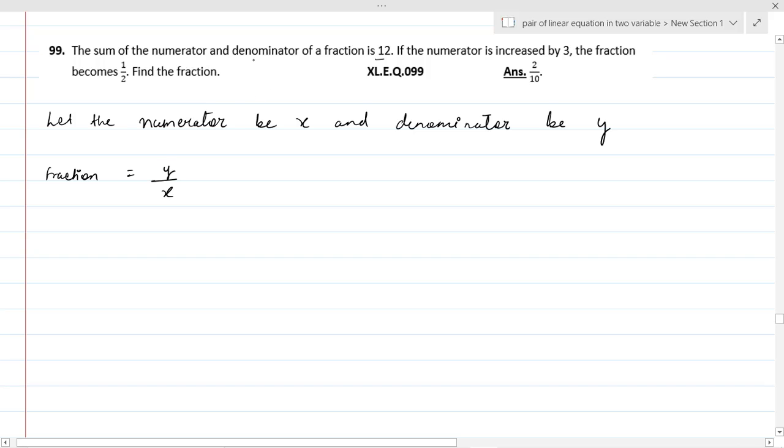The sum of numerator and denominator of a fraction is 12. So here we can get x plus y equal to 12. Equation first.